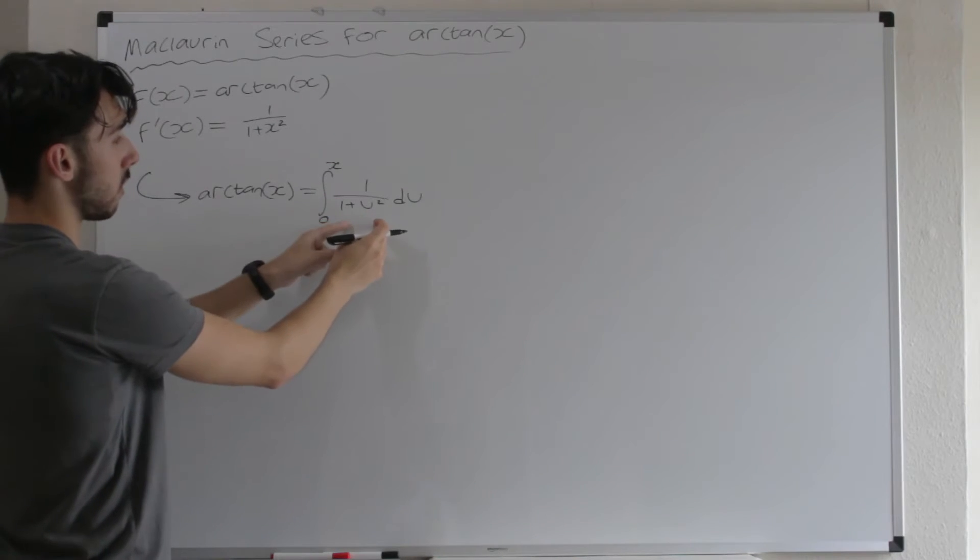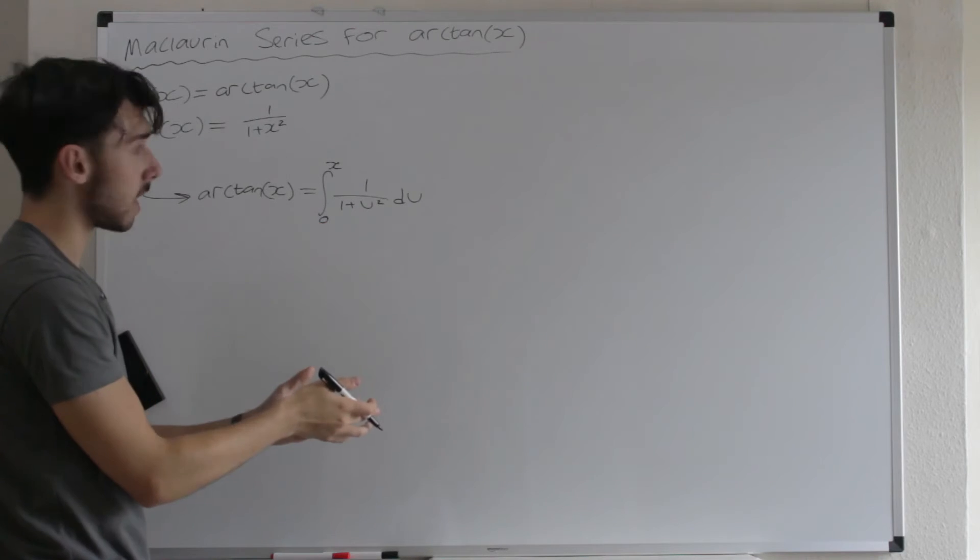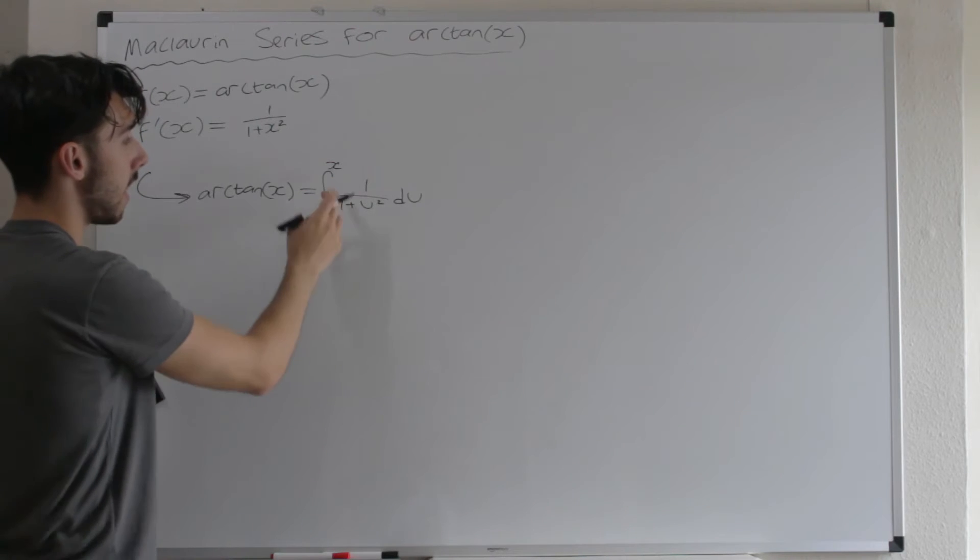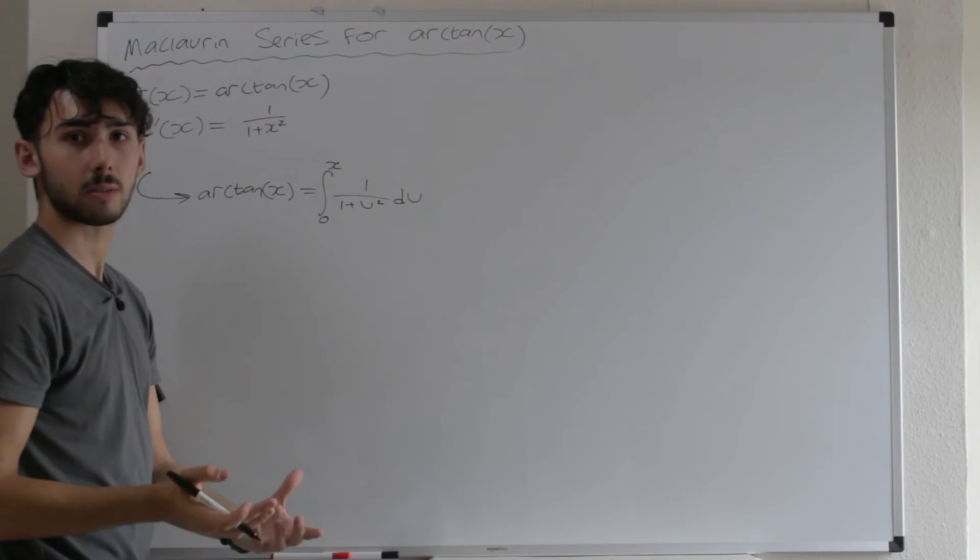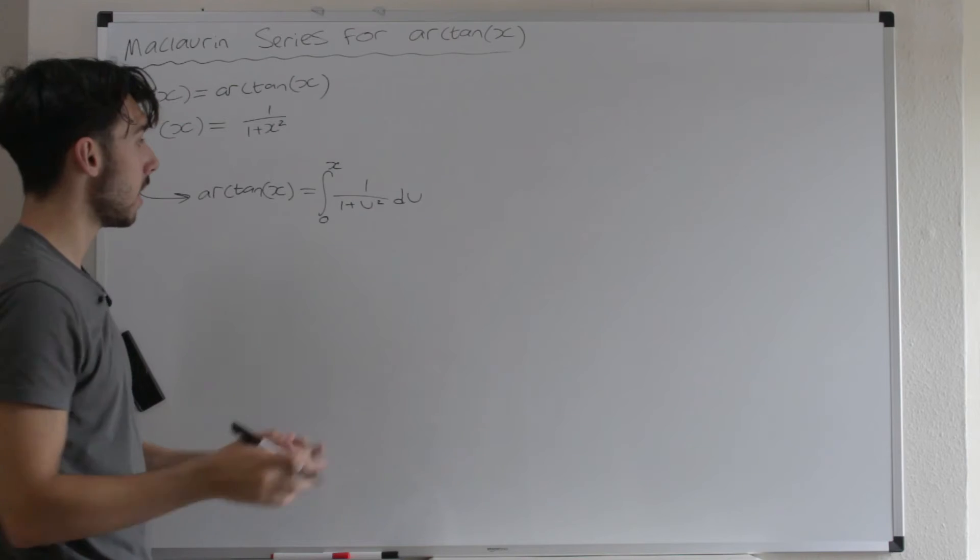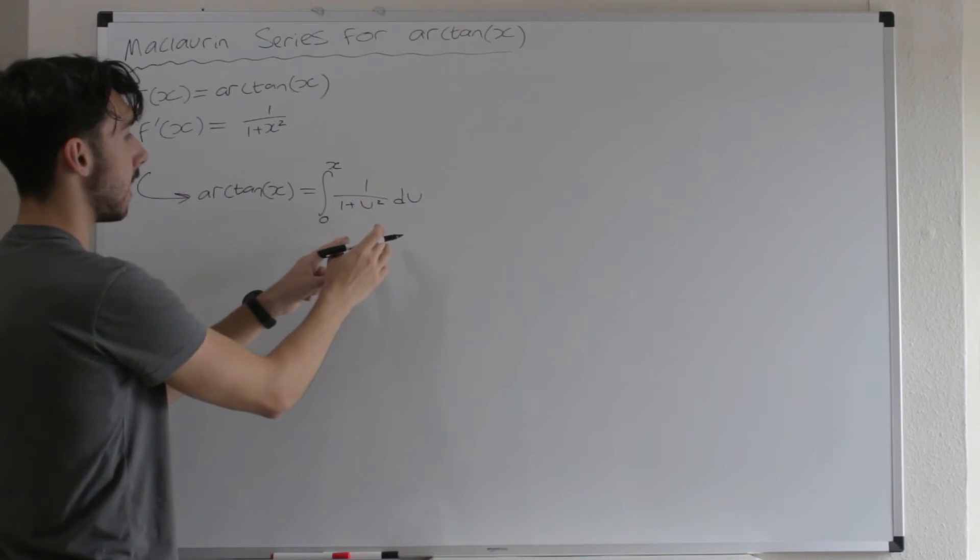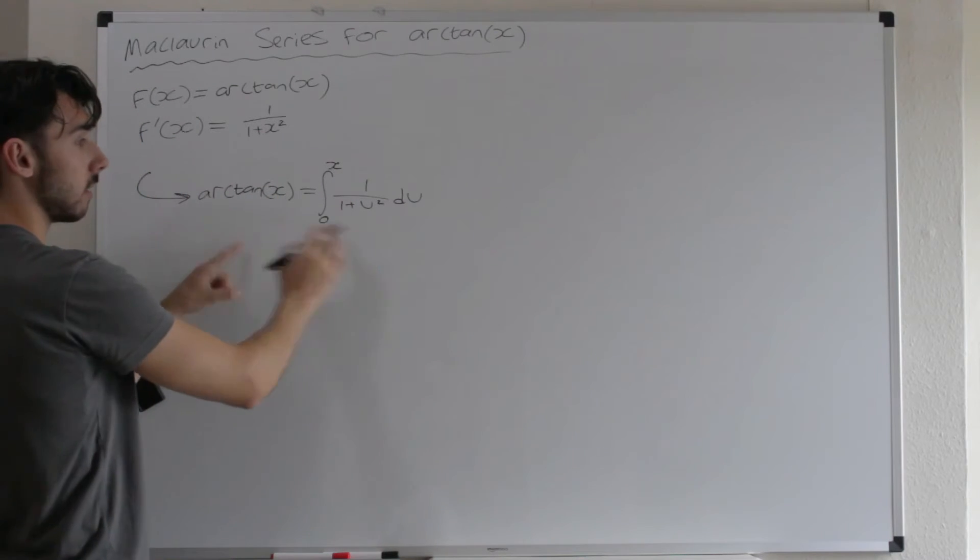So hopefully we can see that arctan x is truly the same thing as the integral from 0 to x of 1 over 1 plus U squared dU. You could try it for yourself. Integrate 1 over 1 plus U squared. You'll get arctan U. And then the limits are x and 0. So it's arctan x minus arctan 0. And that's just arctan x because arctan of 0 is 0. So this is identical to arctan x.